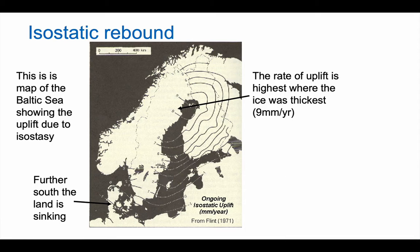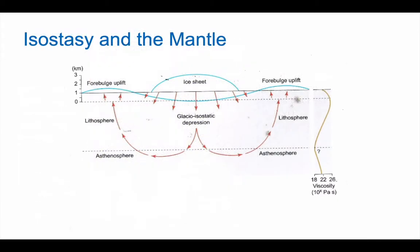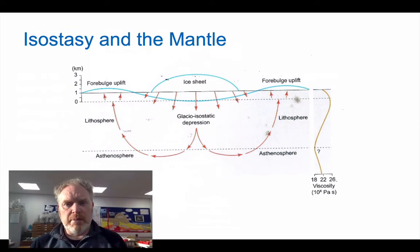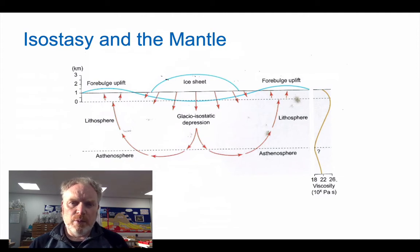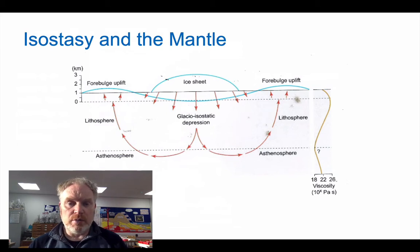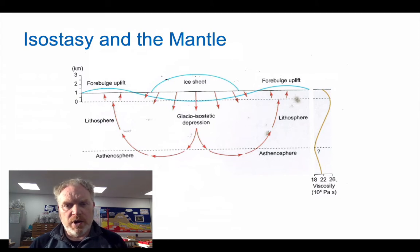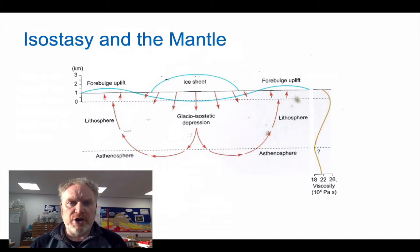If we think about the processes that cause this, it's all down to mantle flow. This diagram shows us where we have an ice sheet that pushes down on the crust, which pushes down the asthenosphere beneath it, which can deform — it flows. And it flows away from where the weight is actually acting on the crust. That material then flows to the area around the ice sheet, creating these forebulges.